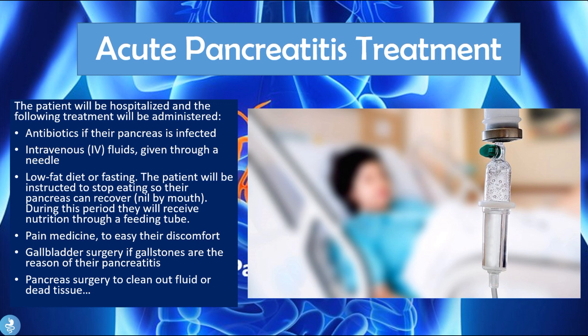In acute pancreatitis, the patient is hospitalized and treated with antibiotics if the pancreas is infected, IV fluids, and a low-fat diet or fasting — referred to as nil by mouth — during which nutrition is provided via a feeding tube. Pain medication is also administered, and gallbladder surgery is performed if gallstones are the cause, as well as pancreatic surgery to clean out any fluid or dead tissue surrounding the pancreas.